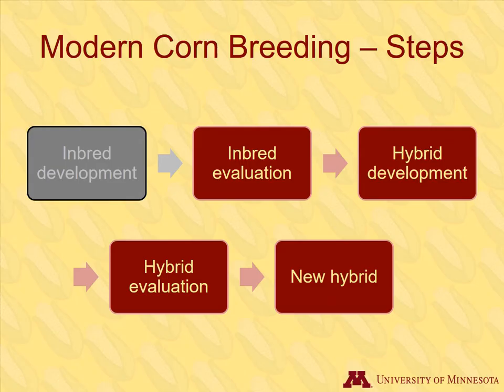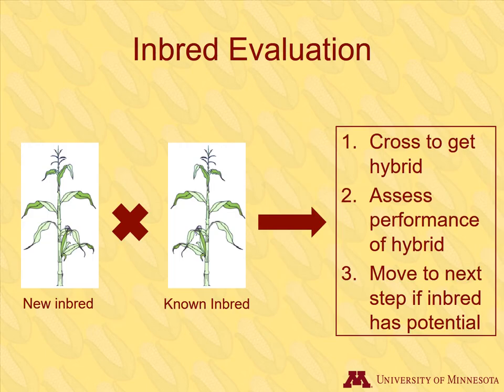As you may have noticed, it takes a long time just to produce the inbreds. In the next step, the inbreds are evaluated. Most of the corn breeding process is devoted to inbred development and evaluation. Some traits can be predicted at the inbred stage, but there are still many unknowns, especially with yield traits. New inbreds are tested for performance by crossing them with a known inbred and their performance is assessed. Inbreds that perform well move on to the next step based on breeding goals.